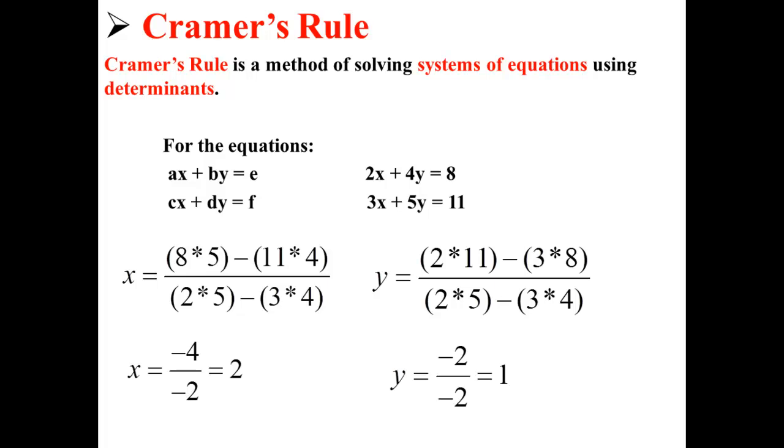This gives us an x of negative 4 divided by negative 2 or simply 2, and a y of negative 2 over negative 2 or simply 1.